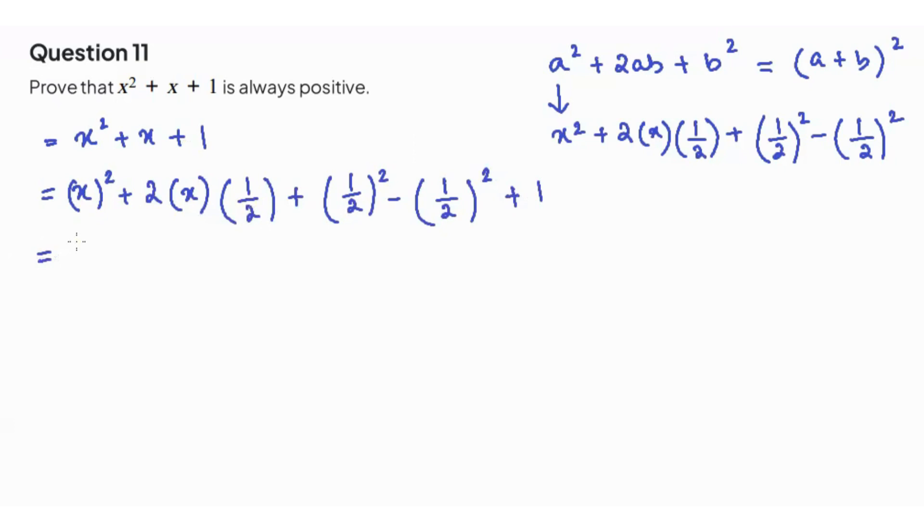So now let's convert this into the a plus b whole square format. That's going to be x plus 1 over 2 whole square. Now this minus 1 over 2 whole square will remain outside the bracket because that's not part of the expansion. Only a square plus 2ab plus b square is part of the expansion for a plus b whole square. So this becomes negative 1 over 4 plus 1.